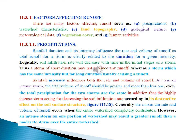Factors Affecting Runoff. Really, there are many factors affecting runoff such as precipitation, watershed characteristics, land topography, geological features, meteorological data, vegetation cover, and human activities. Number one, Precipitations. Rainfall duration and intensity influence the rate and volume of runoff, as total runoff for a storm is clearly related to the duration for a given intensity. Logically, soil infiltration rate will decrease with time in the initial stages of a storm. Thus, a storm of short duration may not produce any runoff, whereas a storm which has the same intensity but for long duration usually causes a runoff.